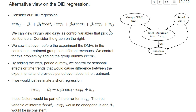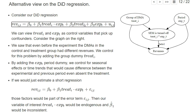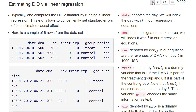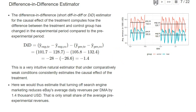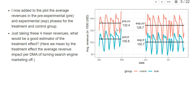Make a guess: if we estimate a shorter regression where we omit the treatment group dummy — not controlling for systematic differences between DMAs — how would our estimator for beta-one-hat change? Will it go up or go down? Remember that before the experiment started, revenues were higher in the control group than in the treatment group. Make a guess in the quiz.